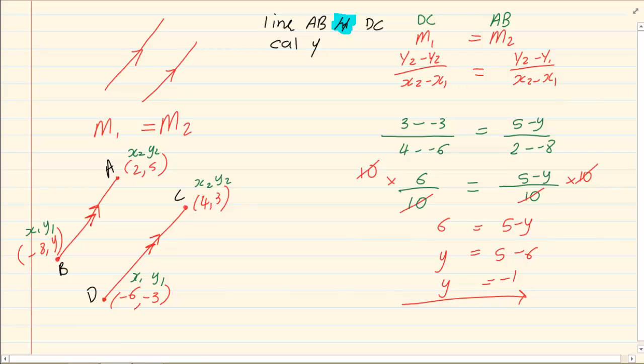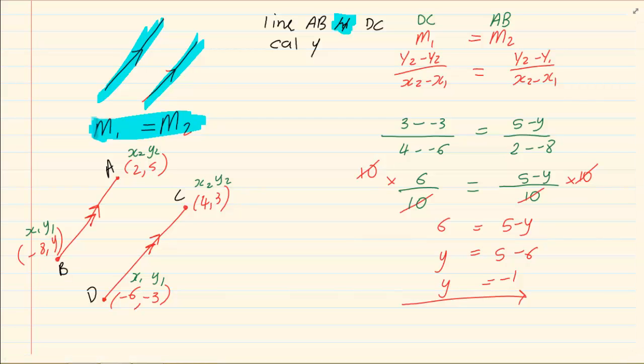So, what we need to remember is that if they tell me something is parallel, immediately I must know that M1 is equal to M2. When you're doing analytical geometry, you will see the one thing that keeps on rescuing you is your gradient. Your gradient is your best friend and you can use it in almost all circumstances. It is easier to use gradient than many other concepts. So, the first rule we have is if they are parallel, the gradients are equal.